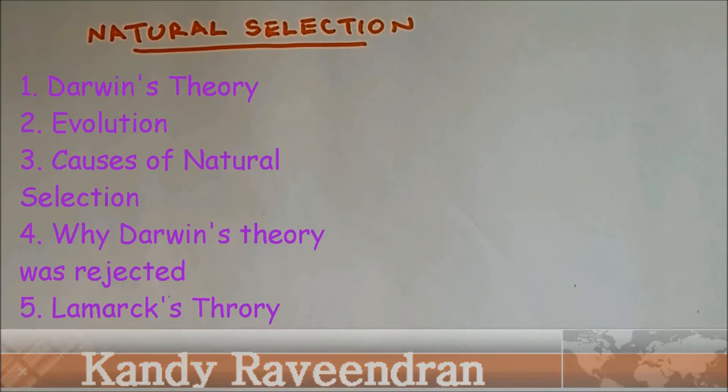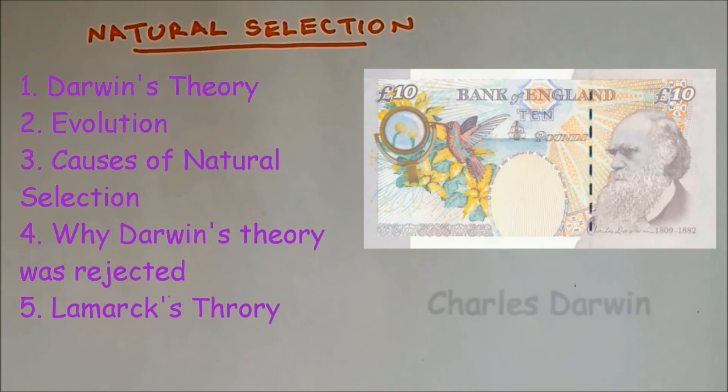The theory of natural selection was proposed by Charles Darwin. And you will be able to find Charles Darwin at the back of the 10 pound notes with the signature.